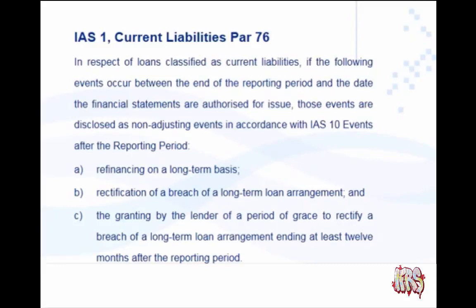We've already looked at these events. If these events happen after year end, those conditions didn't exist at year end, and therefore we've classified them as current liabilities. This paragraph just tells us what we need to disclose.